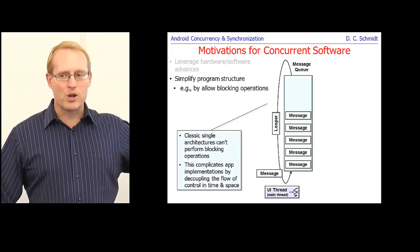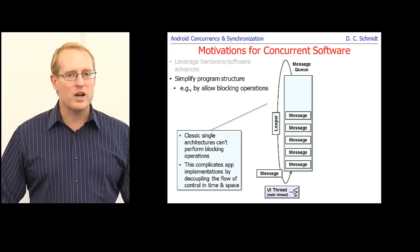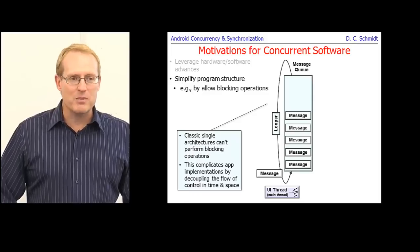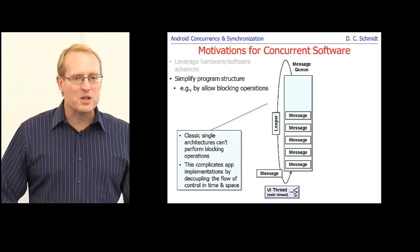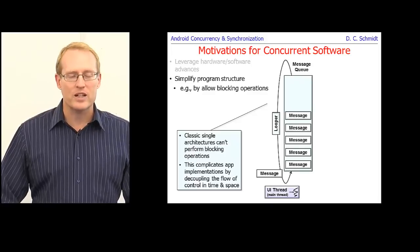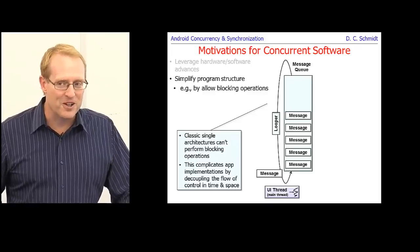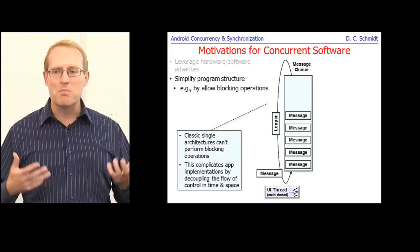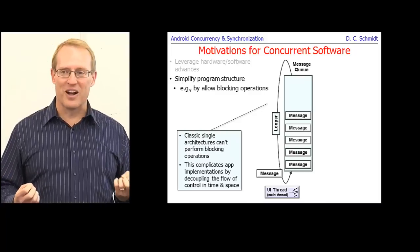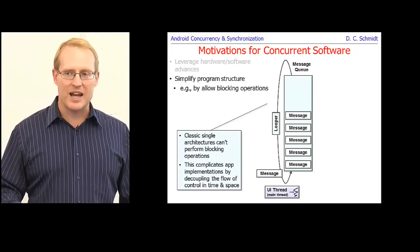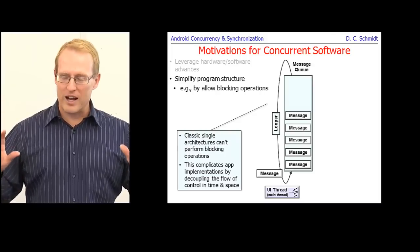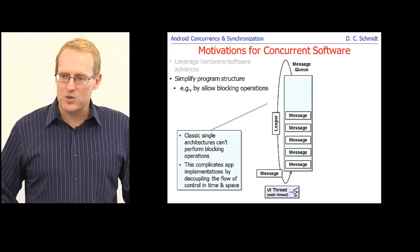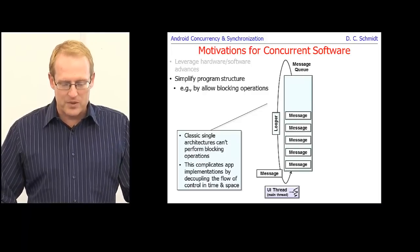Developing software without concurrency can make your program very convoluted. Early windowing systems like X-Windows, early Microsoft Windows, and Macintosh windowing systems were all single-threaded. You couldn't perform blocking operations in your thread of control, because if it blocked, everything in the system came to a halt. You had to decouple the flow of control of operations in time and space using event-based processing.